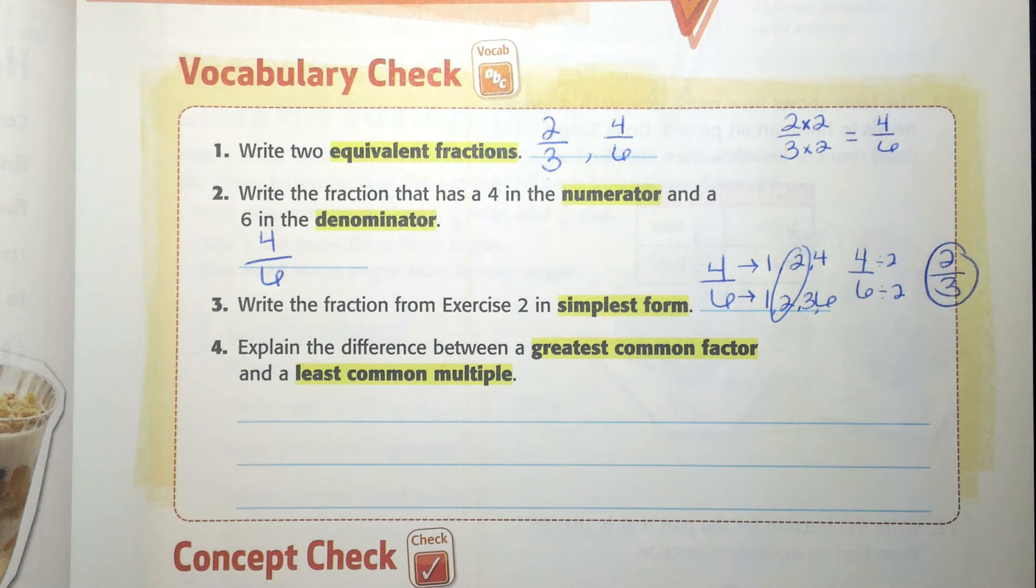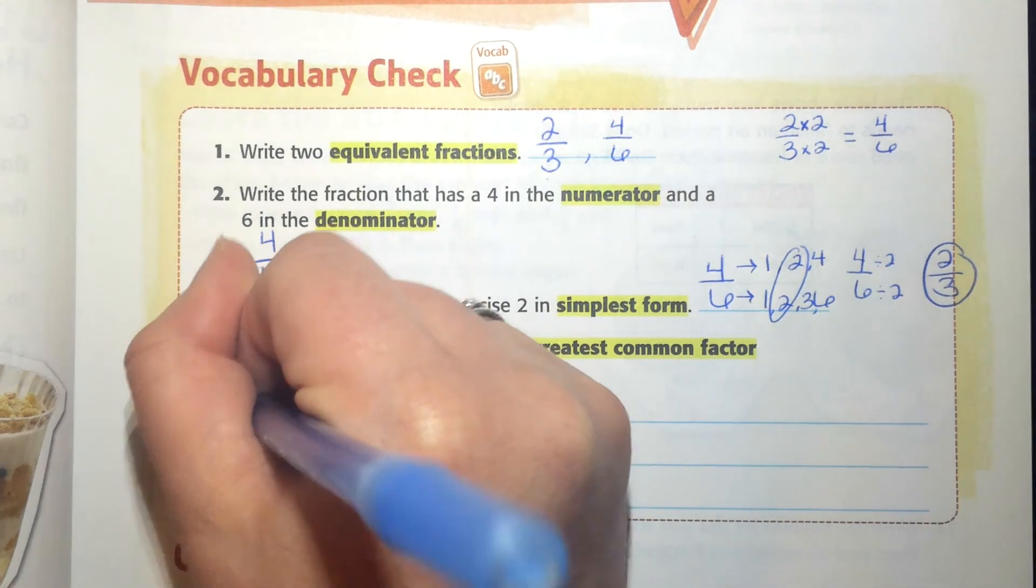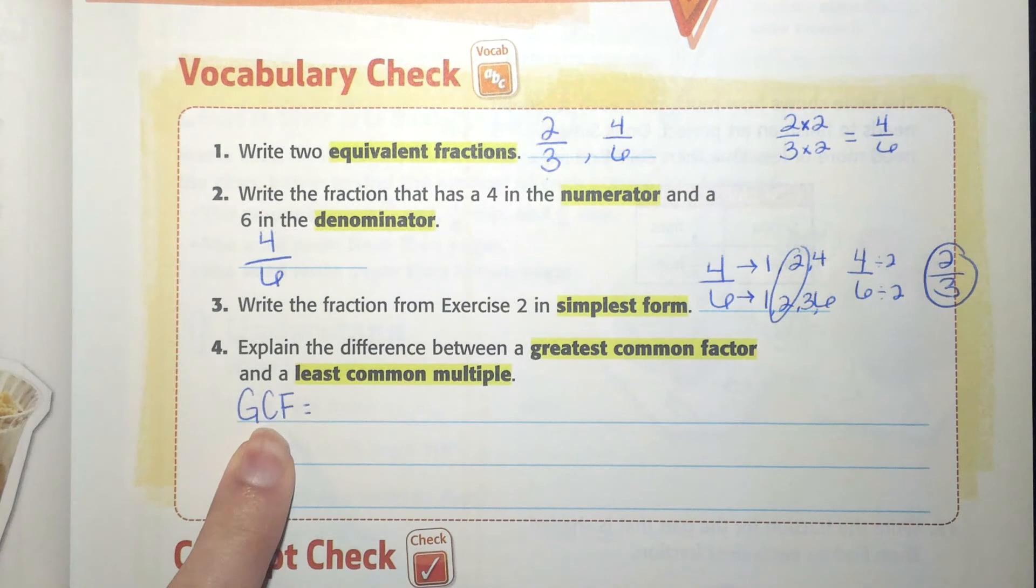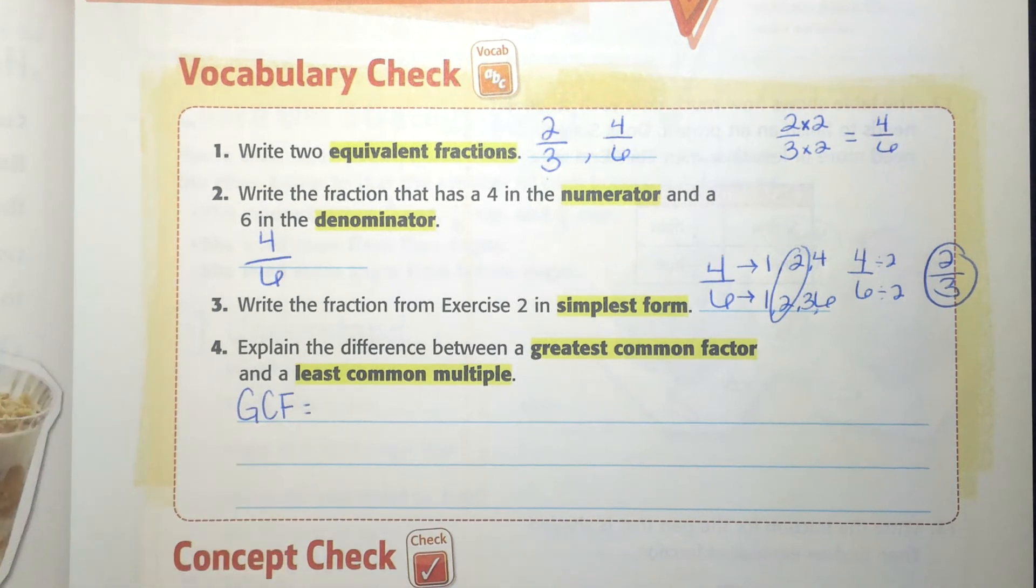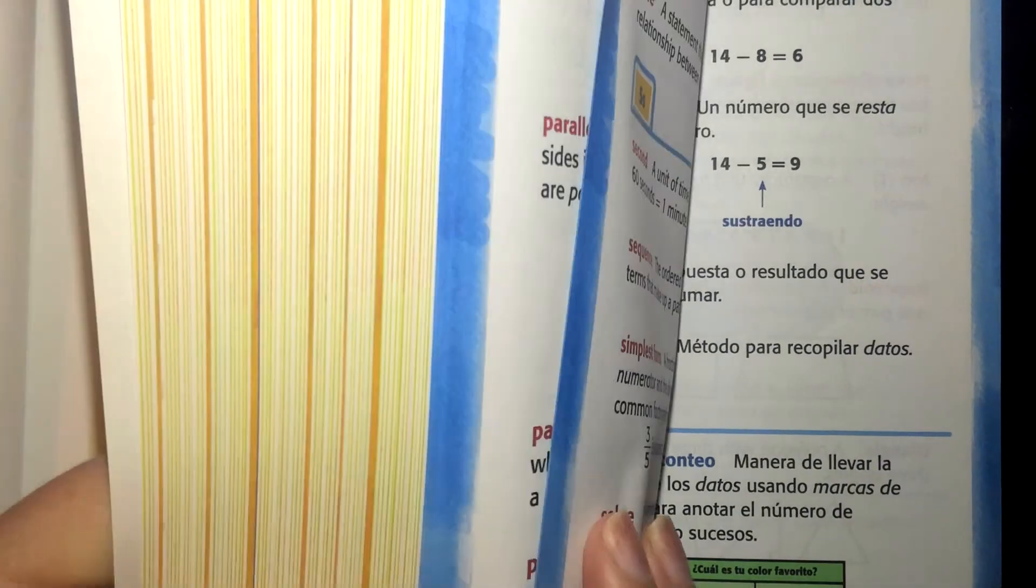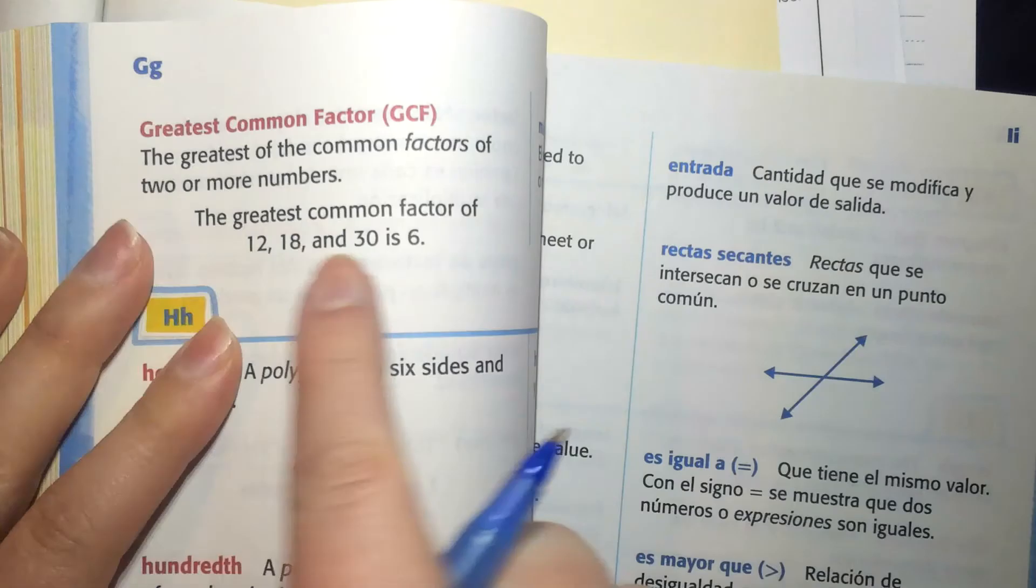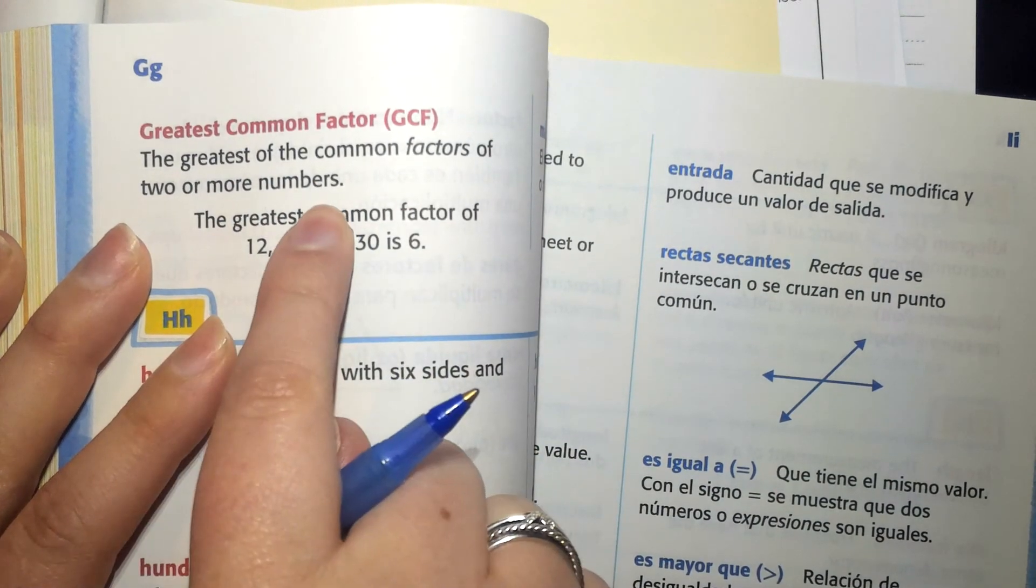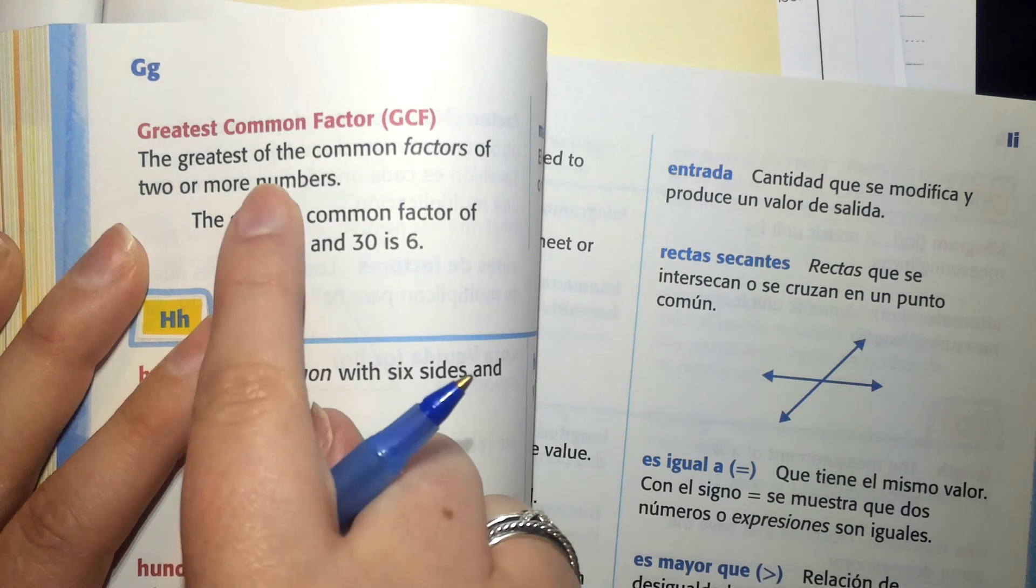Number four says explain the difference between a greatest common factor and a least common multiple. So greatest common factor, I'm going to abbreviate GCF. If I wasn't sure about this, a great place for me to check is in the back of my book and these pages that have blue on the edge, this is my glossary. So I can go into my glossary and look, here's G, greatest common factor, the greatest of the common factors of two or more numbers.